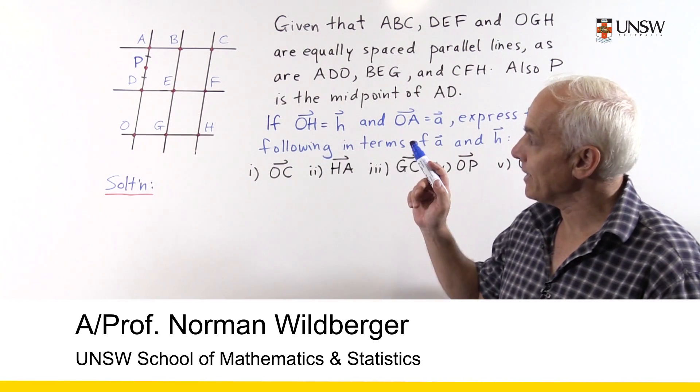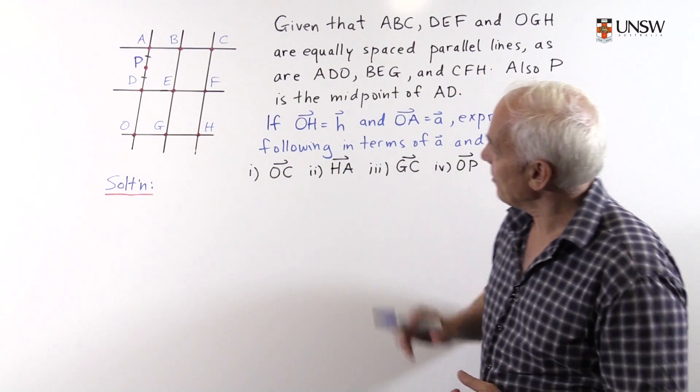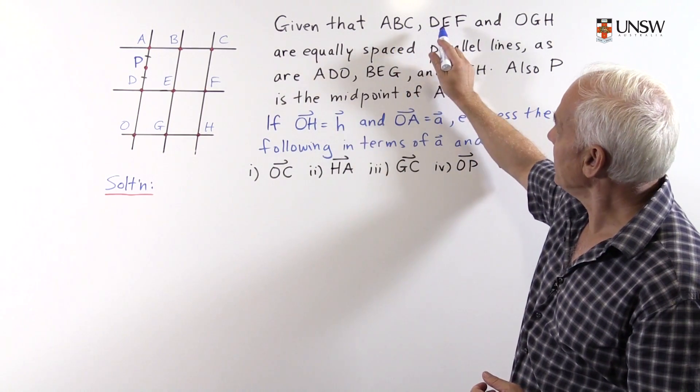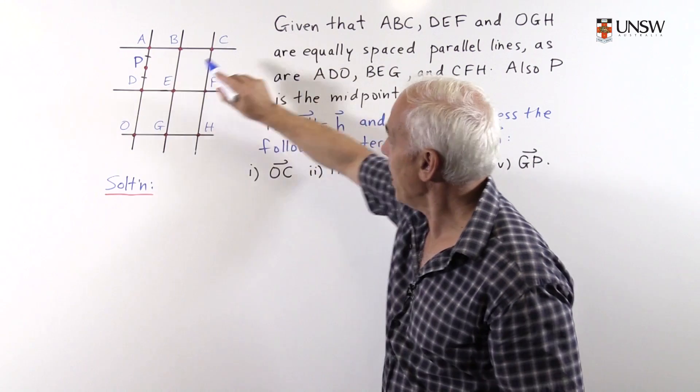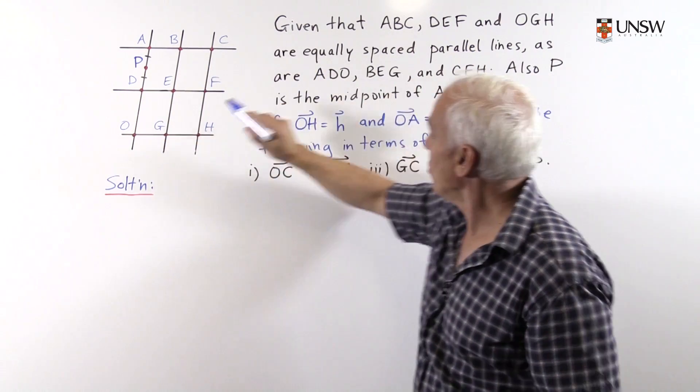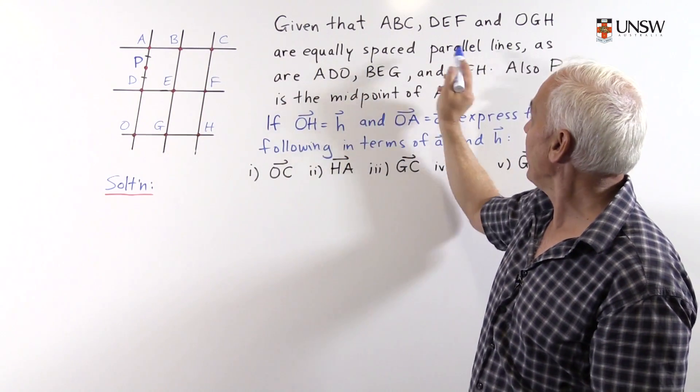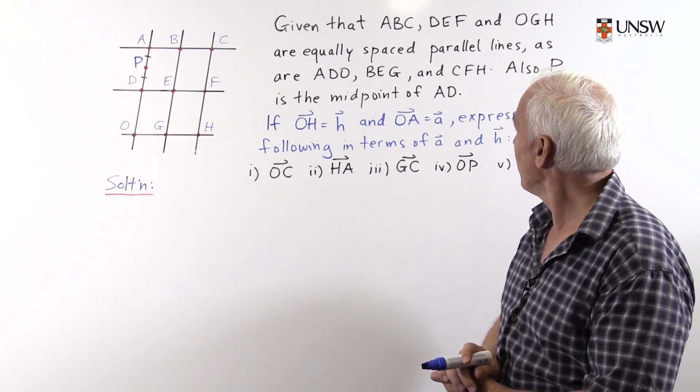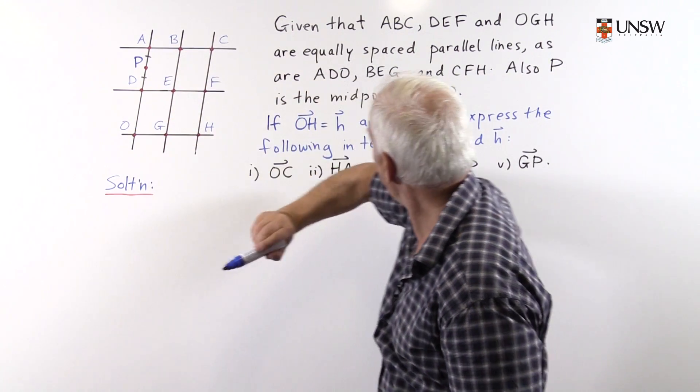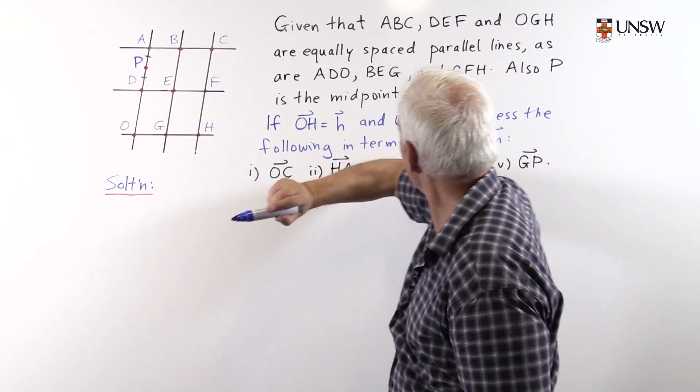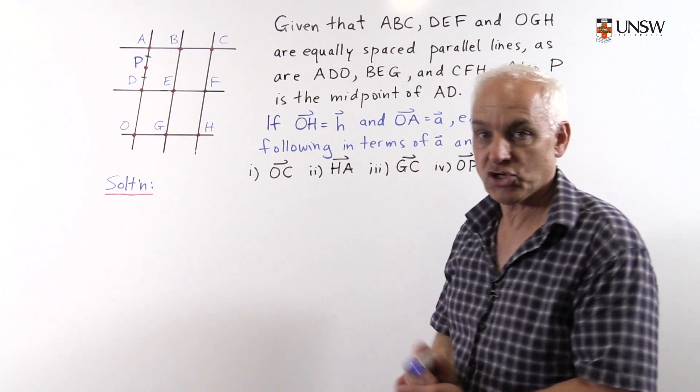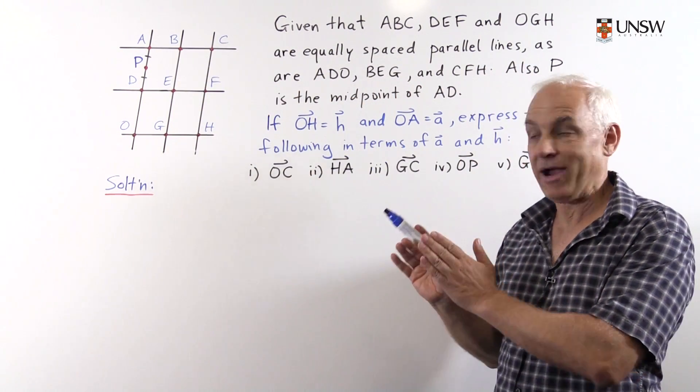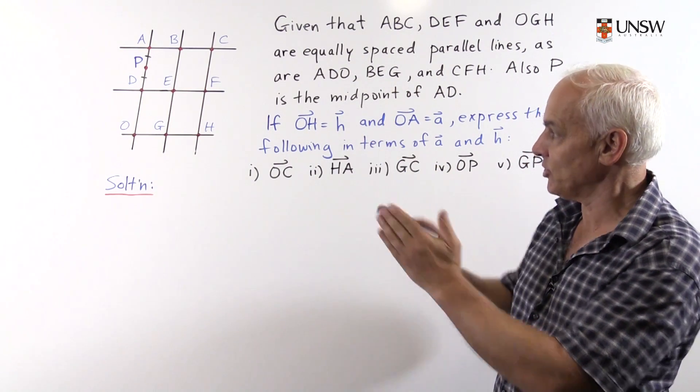In this problem, we're looking at geometrical vectors in the plane. The problem is, given that ABC, DEF, and OGH are equally spaced parallel lines, as are ADO, BEG, and CFH. So we have this configuration of parallel lines in this direction and in this direction.